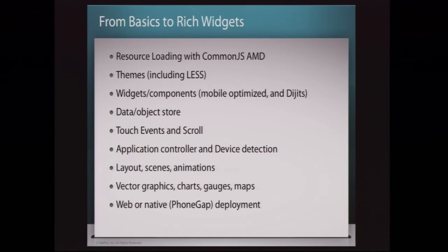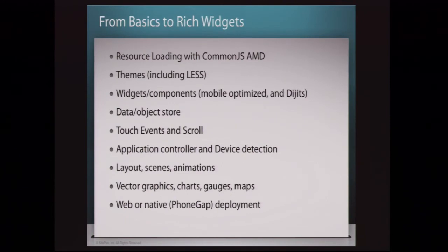Touch events, application controller, device detection — lots of solid support for feature detection. Dojo Mobile also includes capabilities for doing layouts and a layout scene paradigm for switching screens and doing animations between them. That really opens the doors for being able to build a site or application that can work as a mobile site or mobile application, or as an installable application versus something that loads through your browser.